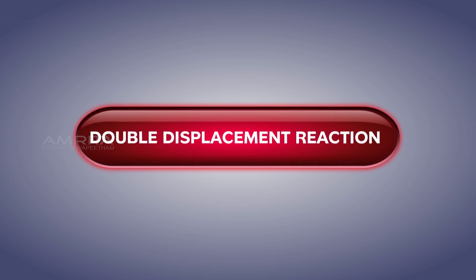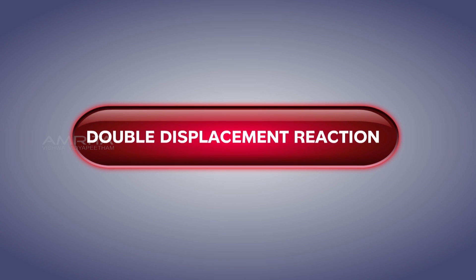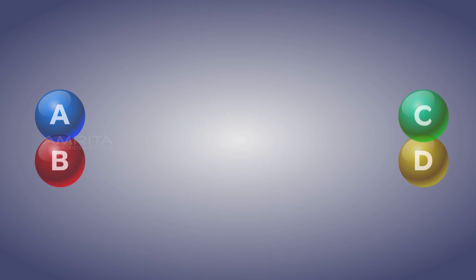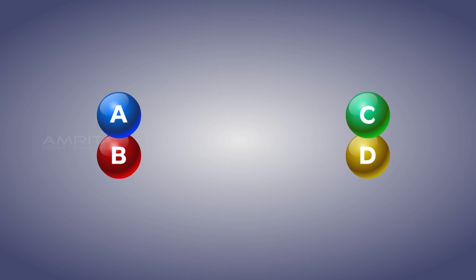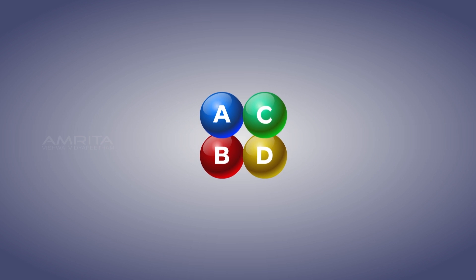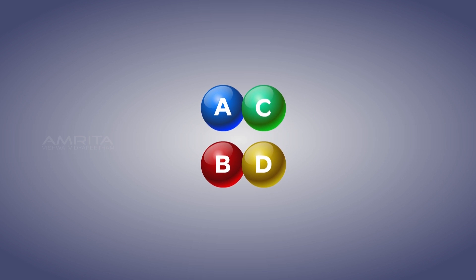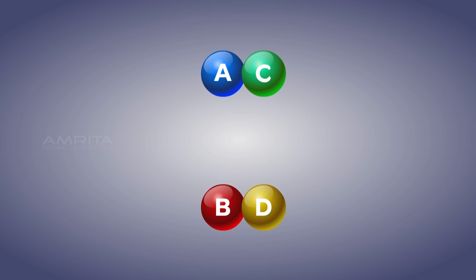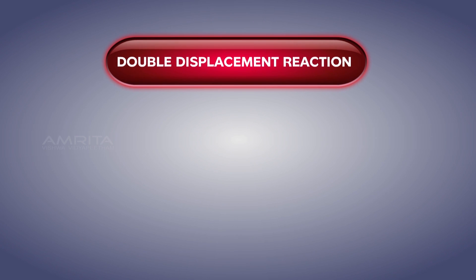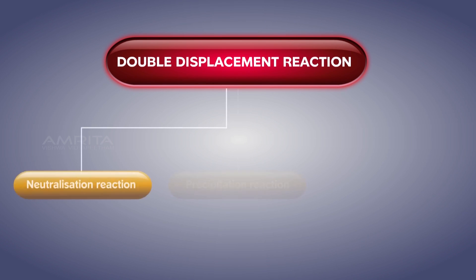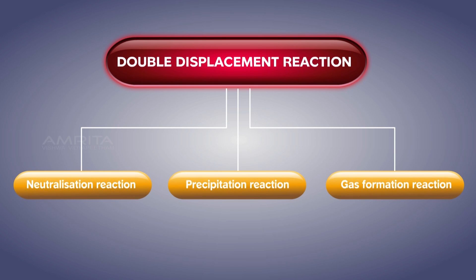Double displacement reactions may be defined as the chemical reactions in which one component each of both the reacting molecules get exchanged to form the products. Double displacement reactions can be further classified into three types: neutralization reaction, precipitation reaction, and gas formation reaction.